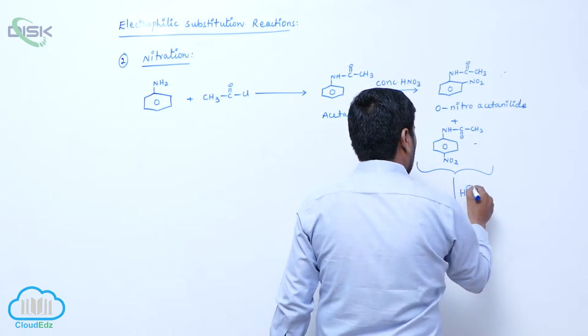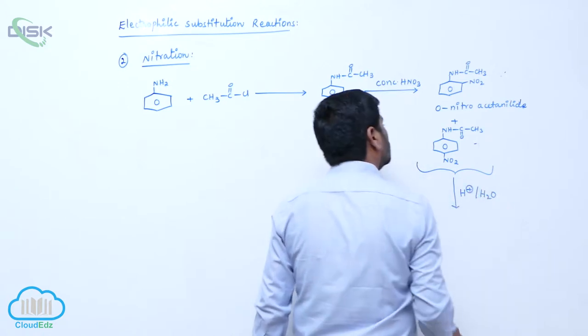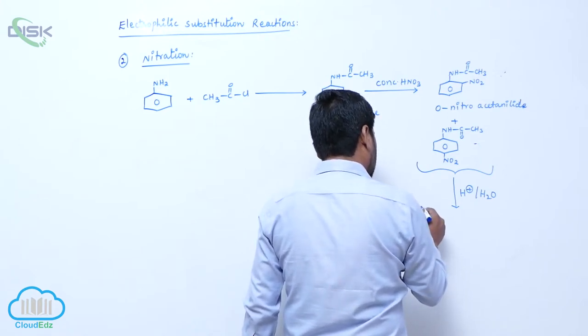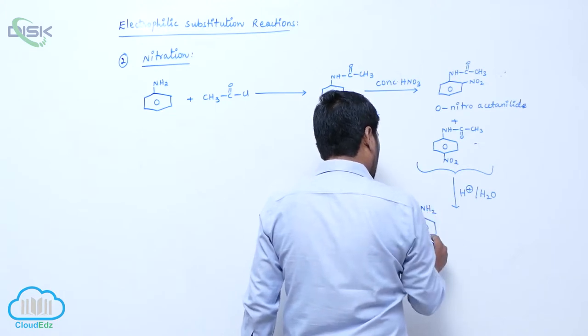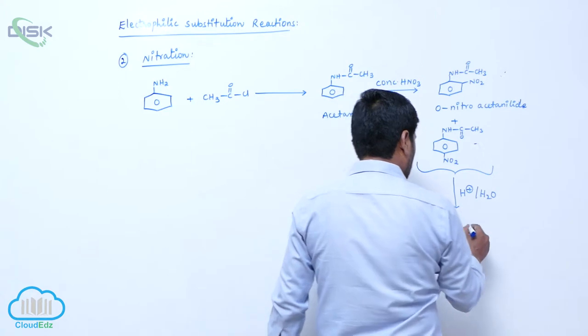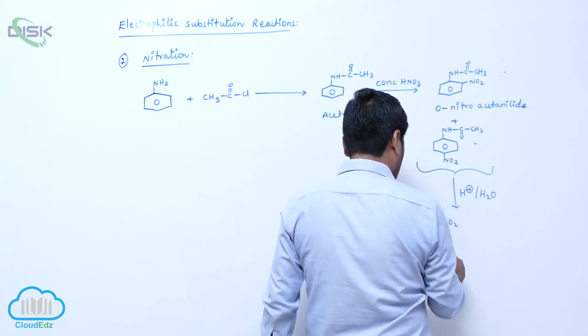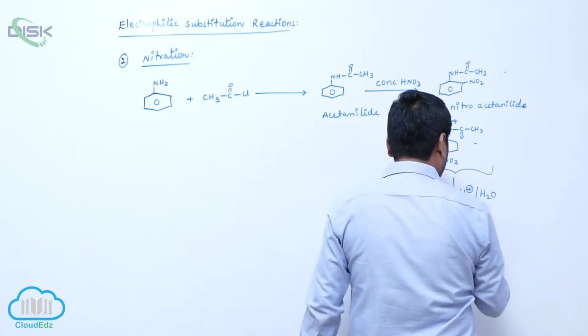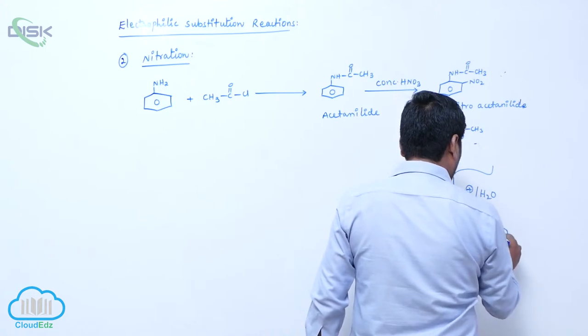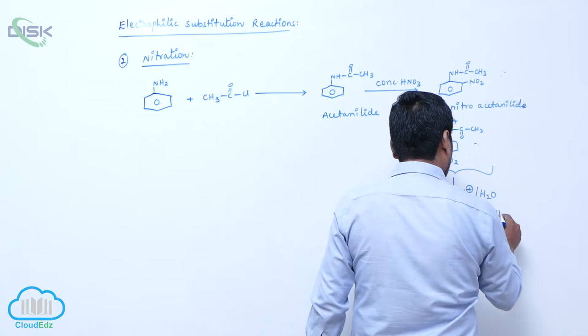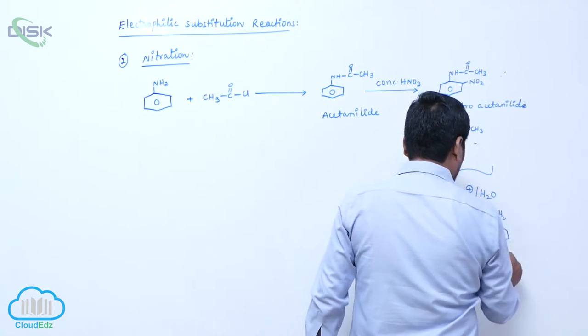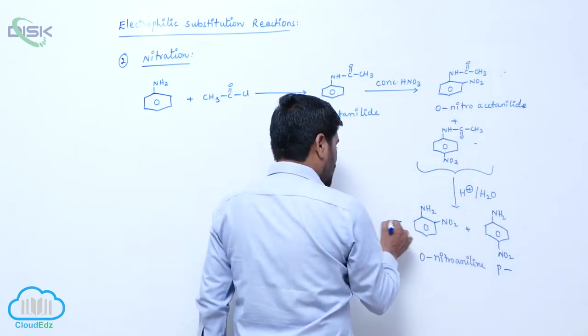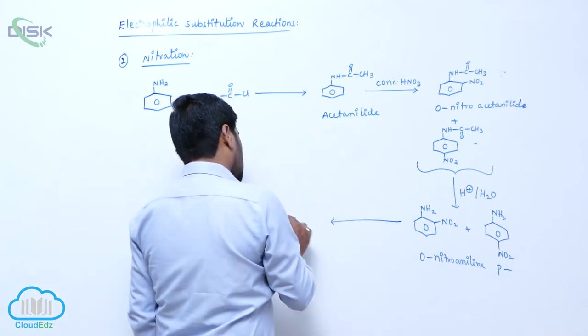H plus in presence of H2O to form orthonitroacetylchloride hydrolysis and paranitroacetylchloride hydrolysis. These two are separated by steam distillation.